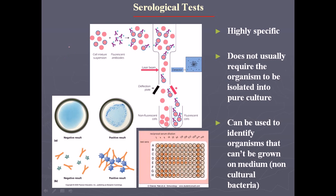If we put bacteria inside a host like a horse, it will produce antibodies against that bacteria. Now we have those antibodies. We can use those antibodies — for example, as shown in this picture — use this antibody with another antigen-producing bacteria.